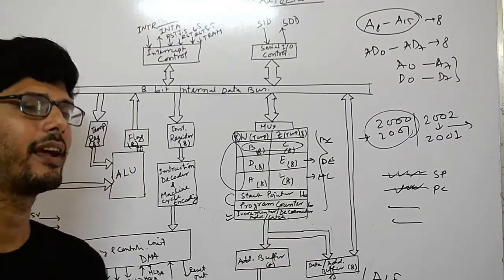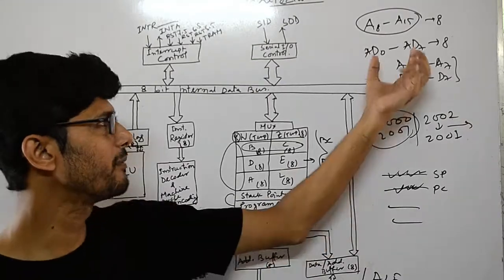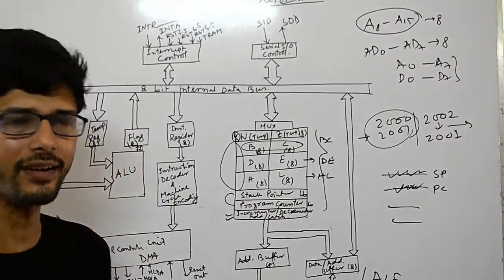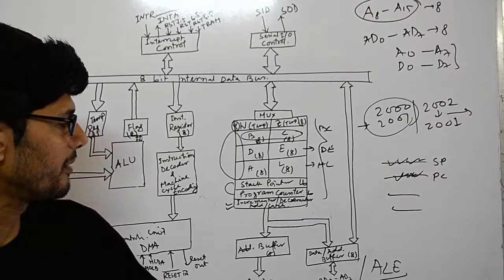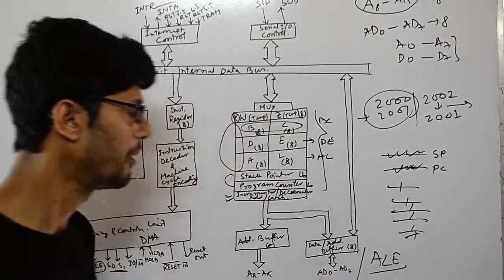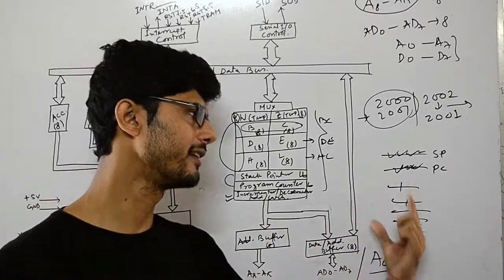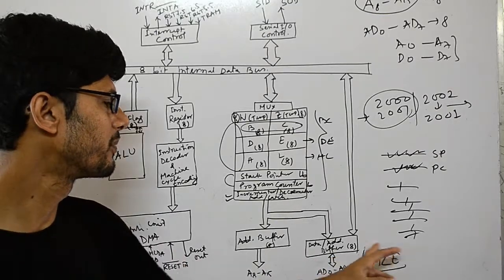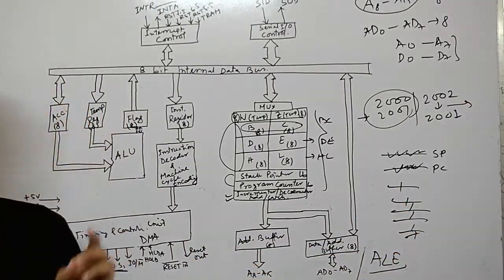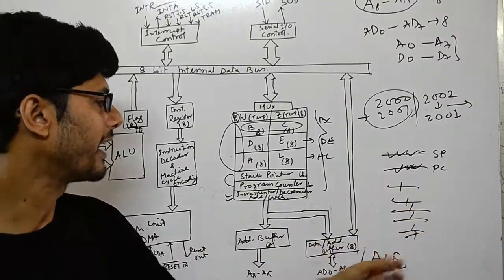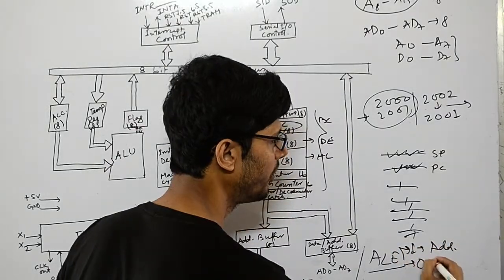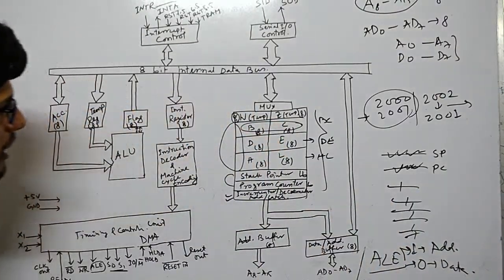ALE stands for address latch enable. When the processor uses the multiplexed AD0–AD7 bus, ALE helps determine whether the information is a data byte or an address. If ALE is 1 (high), it is an address; if ALE is 0 (low), it is data.